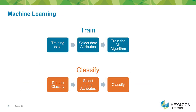To train a machine learning algorithm, you collect training data and then select what attributes of the training data you want to use for training. You train the algorithm based on the selected attributes of the training data. The same applies when you do classification — you give the trained algorithm the data to be classified along with the attributes used for classification. The data to be classified must have the same attributes that were used for training the algorithm.